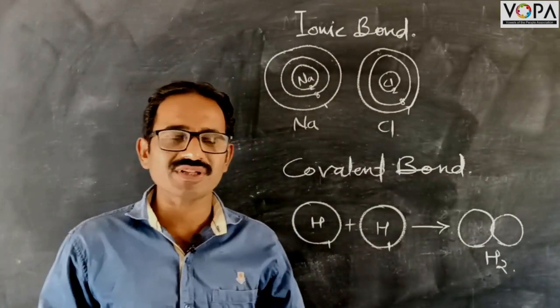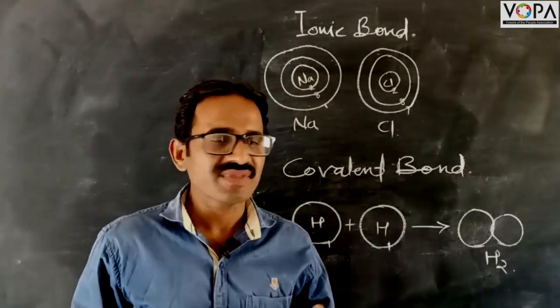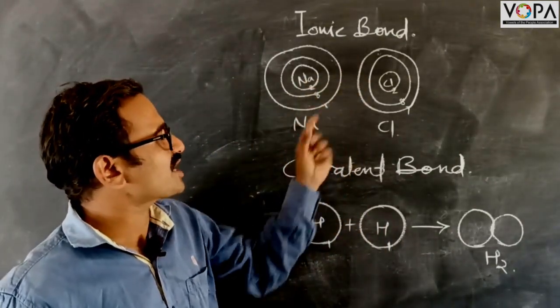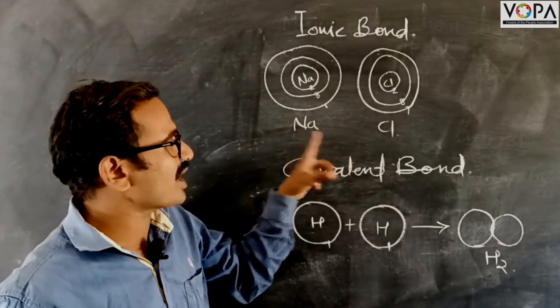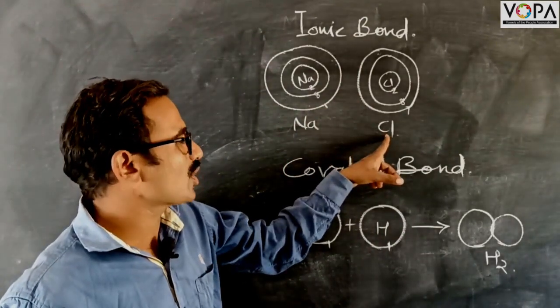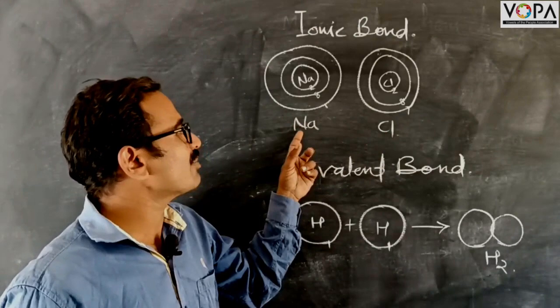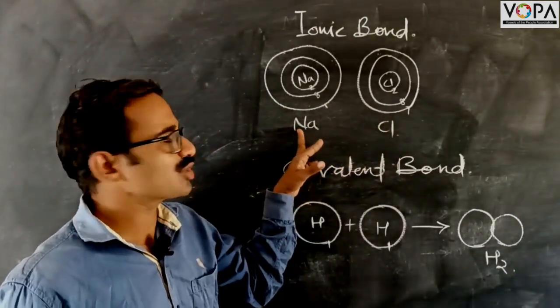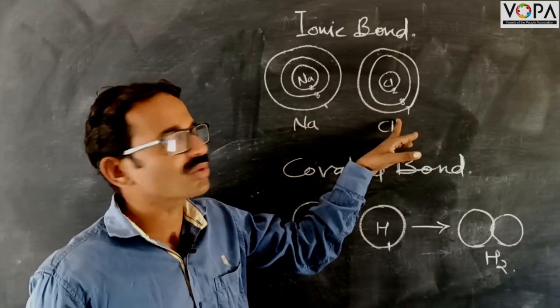For example, an ionic bond forms between two different charges. First is sodium and another is chlorine. Sodium has a positive charge and chlorine has a negative charge.